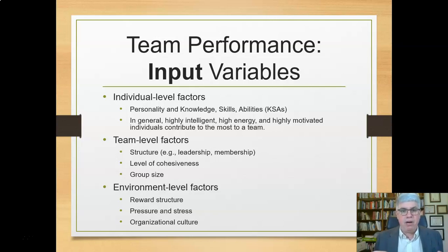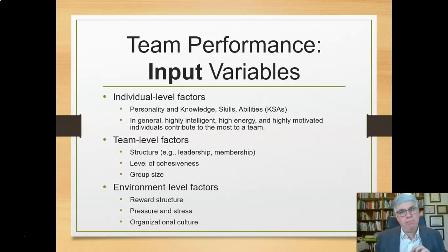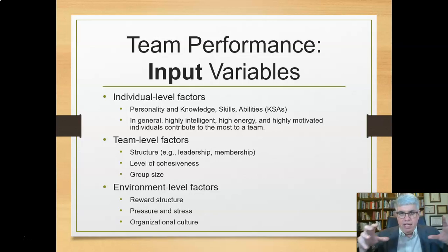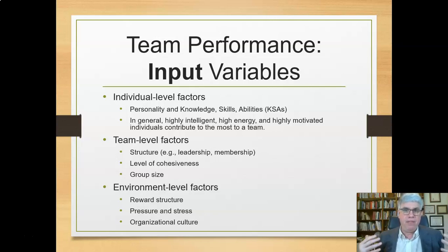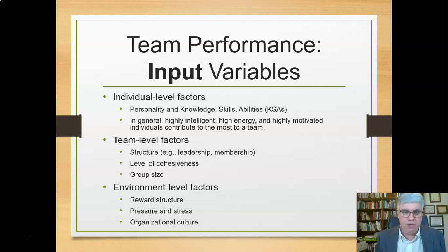There are also team-level factors that are part of the input process: the structure, like the leadership or membership of the group, how members are chosen, and how decisions are made. There's the level of cohesiveness — how well people know each other, whether they're committed to and like each other — and there's the group size. A team of two people is going to function very differently than a team of 15. Then you've got environment-level factors — everything happening outside of the team — like the reward structure. Are the teams going to get a bonus if they achieve the goal on time? What pressures and stress do they have from outside? Do they have enough time to contribute to the team?